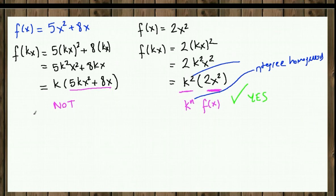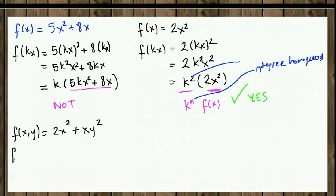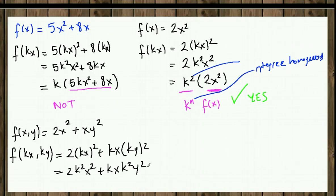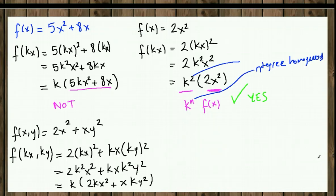Let's see another example with a multivariable function: f(x, y) equals 2x squared plus xy squared. This time we substitute kx for x and ky for y. So we get 2(kx) squared plus (kx)(ky) squared, which expands to 2k squared x squared plus kx times k squared y squared. Factoring out k — the lowest power — gives k times (2kx squared plus xy squared k), which is not the same as the original function, so this is not homogeneous.